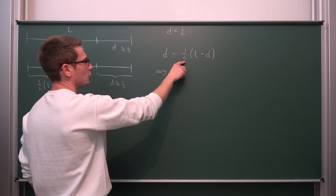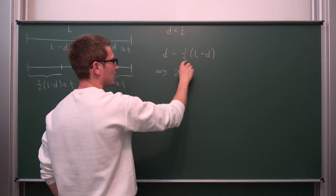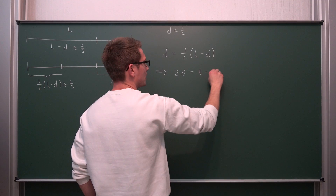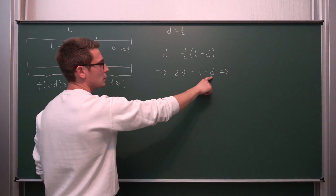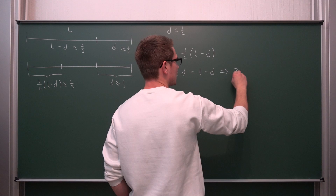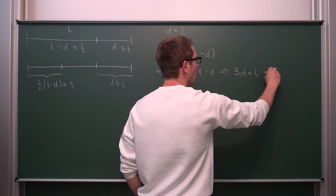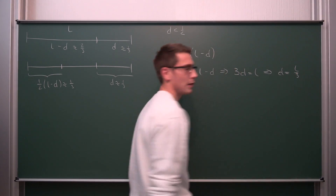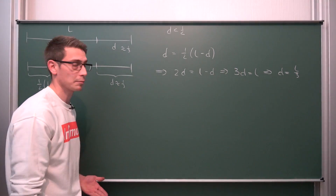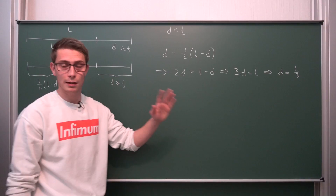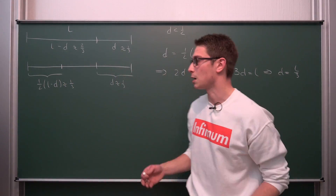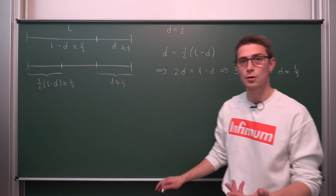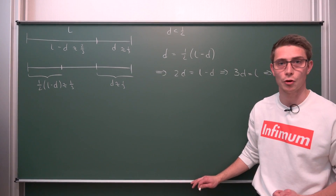We can solve this equation easily. Over time it converges, so 2D equals L minus D. Adding D on both sides, 3D equals L, or in other words D equals L divided by 3 — a third. In the limit, if you do this infinitely many times, our divisor is going to converge to a third.